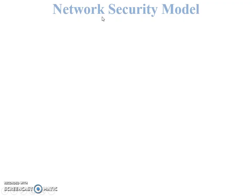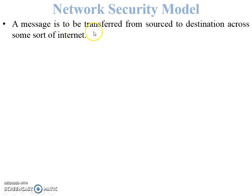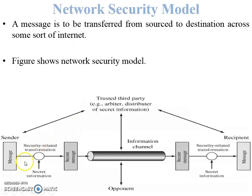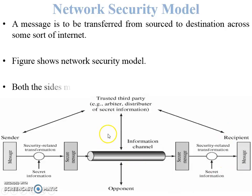In the network security model, data is passed through the internet from source to destination — which means a collection of networks. This figure shows the network security model. You can see the sender and receiver: the original message is converted into a secure message, passed through the information channel, and at the destination side it is converted back into plaintext.